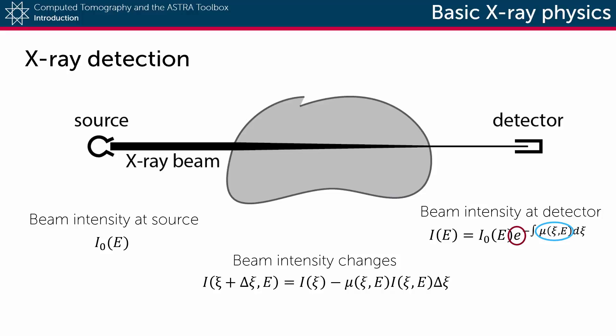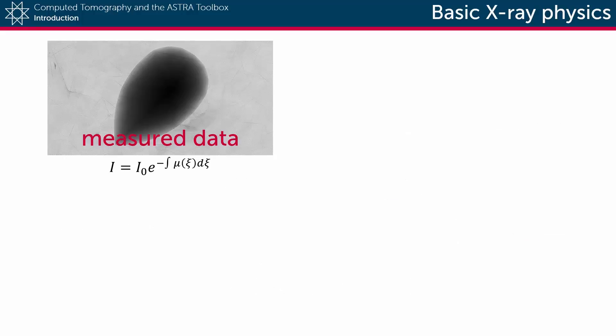Fortunately, this can be easily circumvented. The only thing we need to know is the beam intensity at the source, which can be measured by doing an empty scan, also called a flatfield.